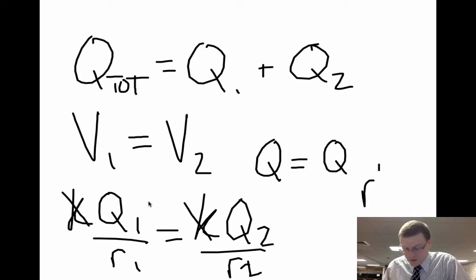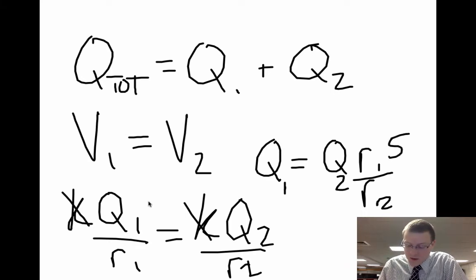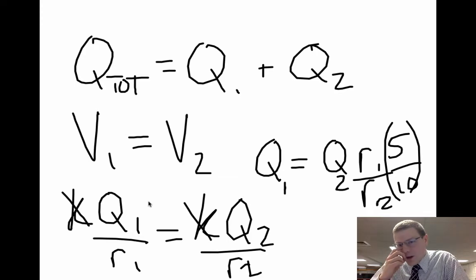So charge 1 would be the ratio of charge 2 multiplied by R1 over R2. So I'm going to divide those two radii to get how the charges redistribute themselves. So in this case, since radius 1 is 5 cm and radius 2 is 10 cm, that means that charge on sphere 1 is going to be half that of charge 2.